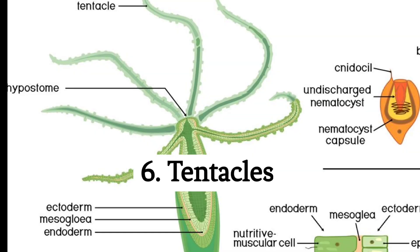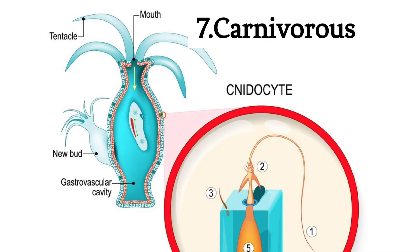6. Tentacles: Most Cnidarians have tentacles armed with cnidocytes and nematocysts for capturing prey. The tentacles surround the mouth and help in food intake. 7. Carnivorous Feeding: Cnidarians are carnivorous and primarily feed on small aquatic organisms such as zooplankton and small fish.